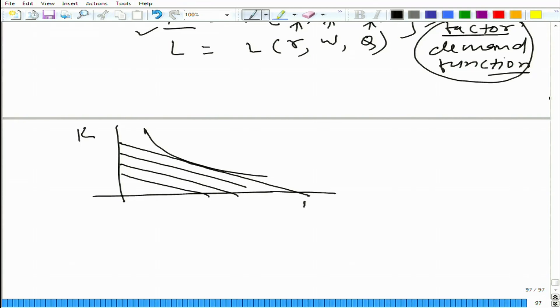Here we have K and here we have L. And of course, what is the slope of this iso-cost line? It is minus W by R.